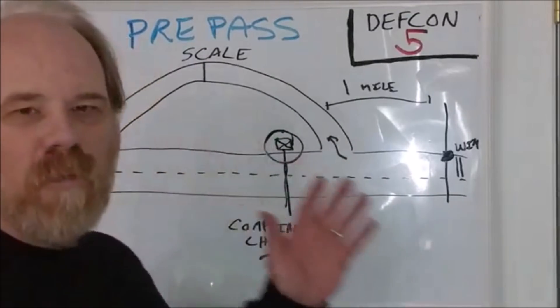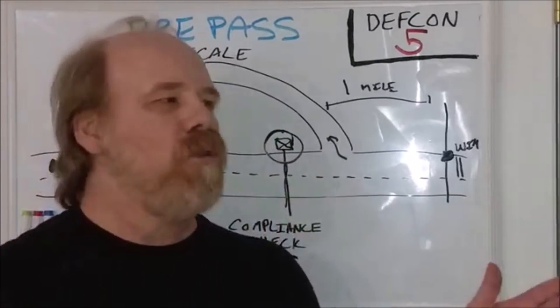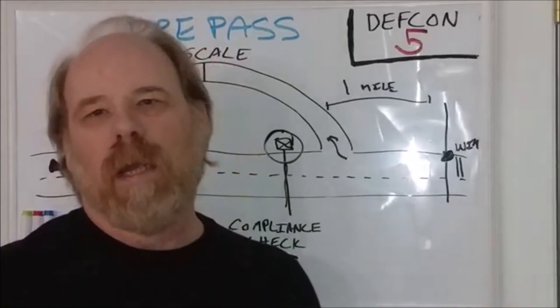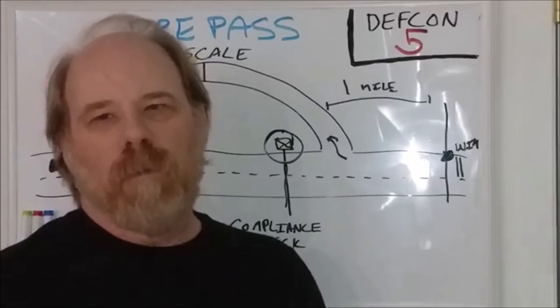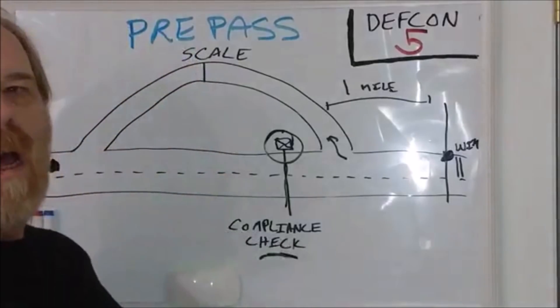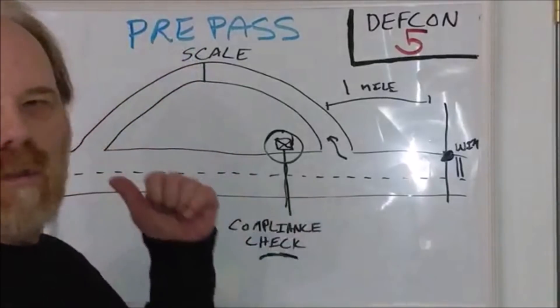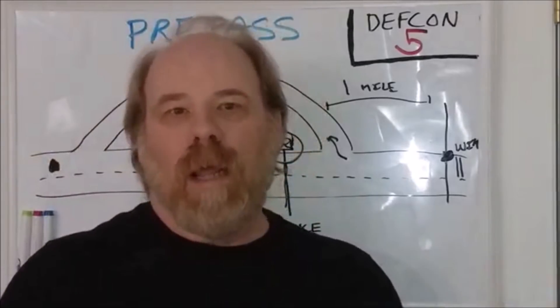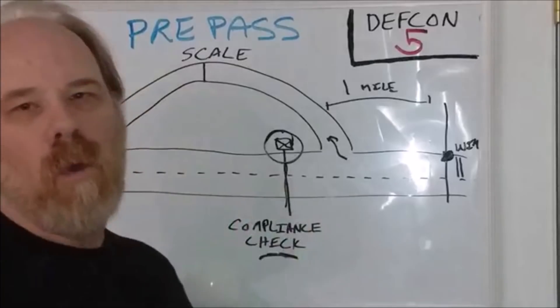They can set it for random so that some trucks come in, because sometimes even though you're cleared to bypass, you'll get the red anyway, and that's because it's set up for random checks. Or they can set a bypass on it, green, so everybody goes by the scale in case the scale is closed or whatever like that. So it's up to them in the scale how they want to set it up.